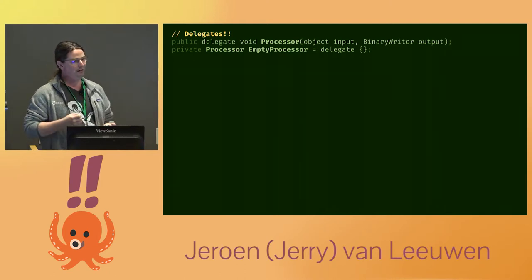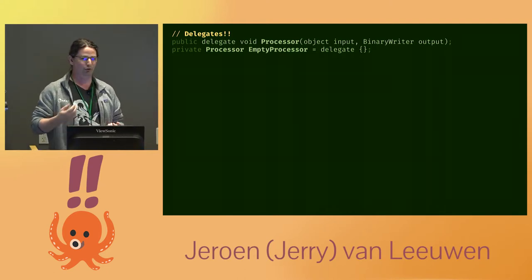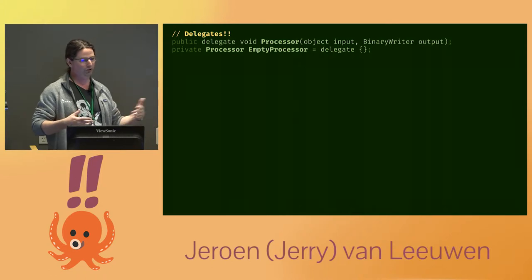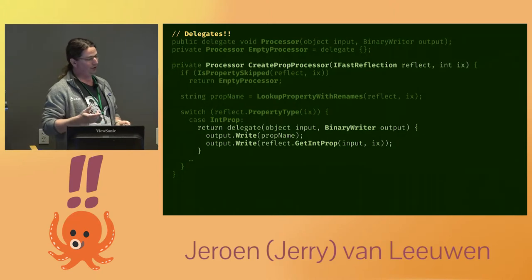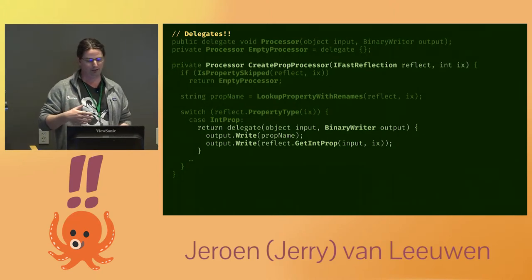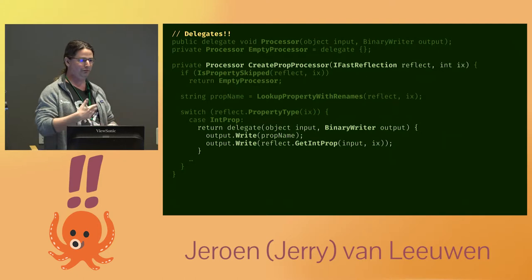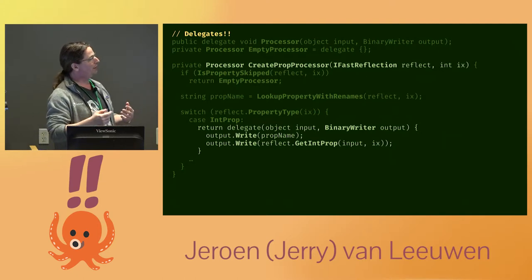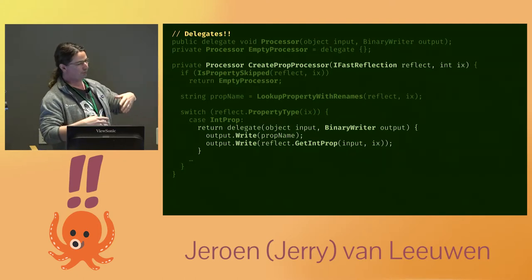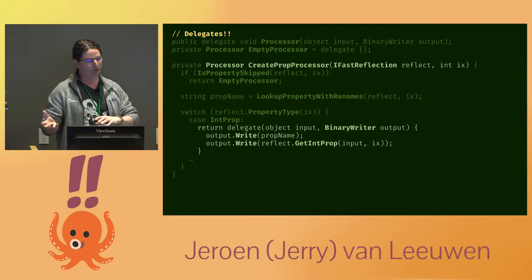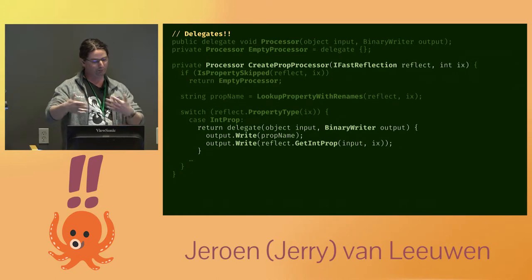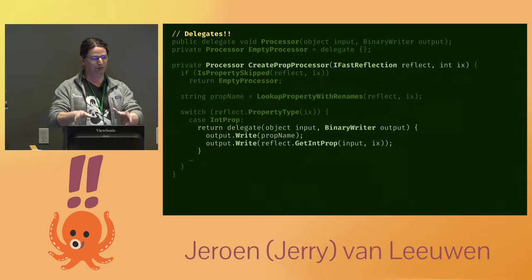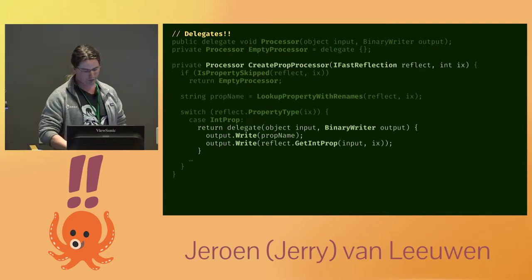.NET has delegates — think of them as strongly typed function pointers with parameter types included. So rather than directly making decisions and writing out values, I created a level of abstraction: a processor concept that takes an input object and writes to a binary writer output. I created a factory method that makes all of the decisions and returns a delegate that does the actual writing. This doesn't do the serialization yet, but it's the first step towards it.